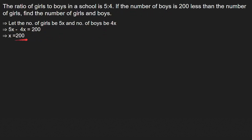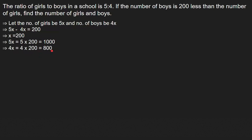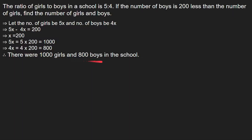So x is 200. It means there are 200 such groups, each with 5 girls and 4 boys. So 5x equals 5 into 200, which is 1000, and 4x equals 4 into 200, which is 800. Therefore, there were 1000 girls and 800 boys in the school.